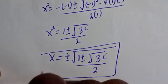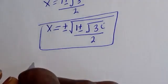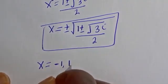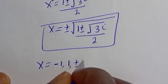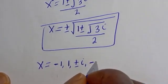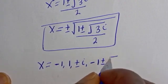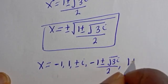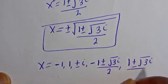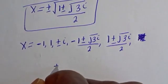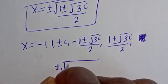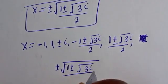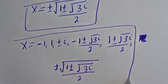Therefore the values of s are: s equals 1, s equals minus 1, s equals plus or minus i, s equals minus 1 plus or minus root 3 i over 2, s equals 1 plus or minus root 3 i over 2, and s equals plus or minus square root of (1 plus or minus root 3 i over 2). This is the final answer.